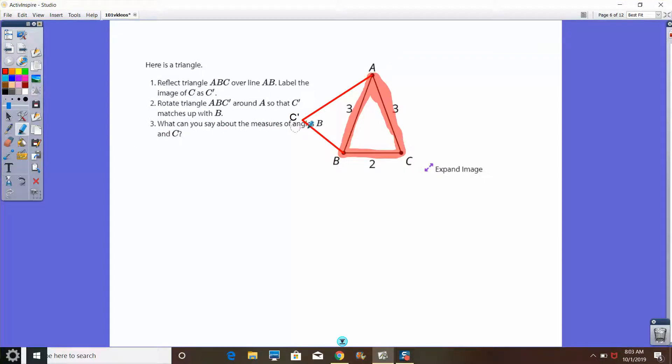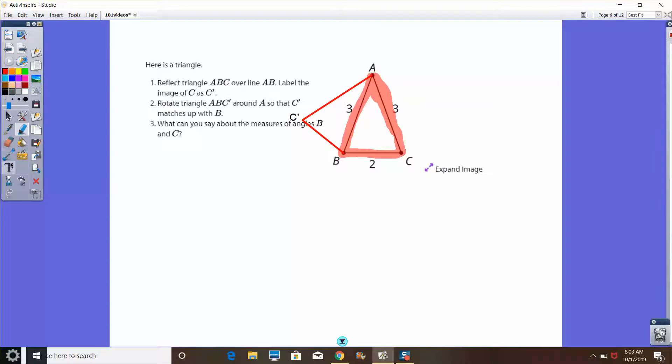So what can we say about measures of angles B and C? Well, here's the thing. If I overlay this triangle, this is our image of C. Since it's a reflection, this angle C is the same as angle C prime. So if I go all the way around and C prime matches up with B exactly, then we would say B and C happen to be the same angle. Because C prime, our image of C, matches up with B exactly. So B and C originally are the same angle.